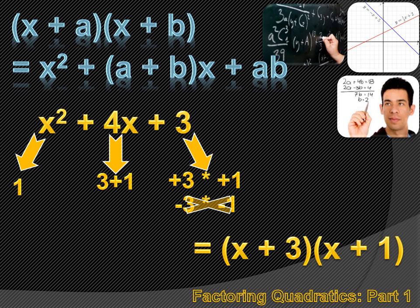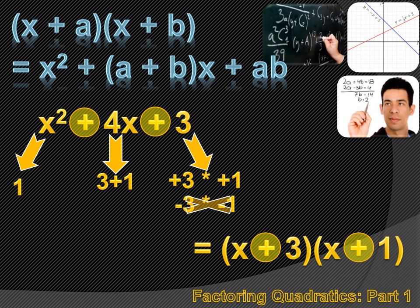Here's something you'll want to memorize. The signs in my quadratic are both positive, and the signs between the first and second term in each of the binomials are also positive. If you've got two pluses in the quadratic, each of the binomials is going to be addition as well.